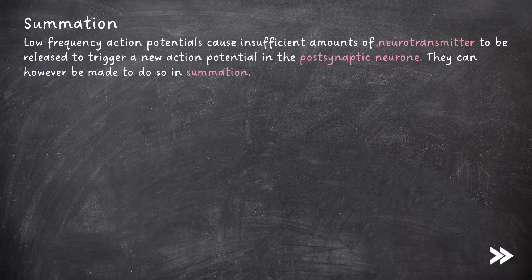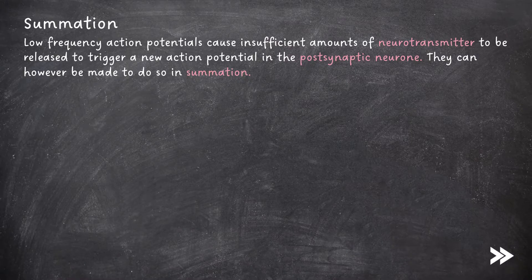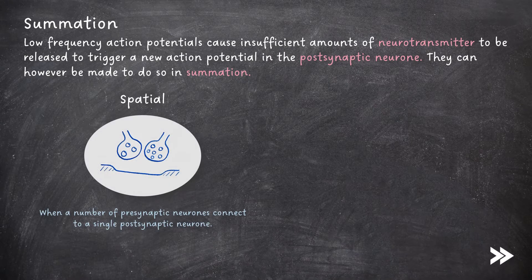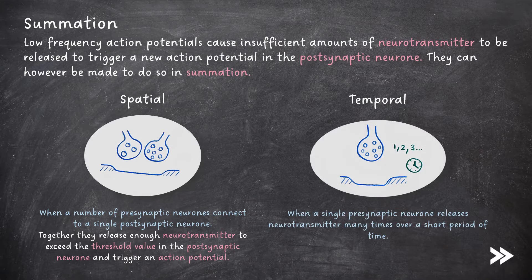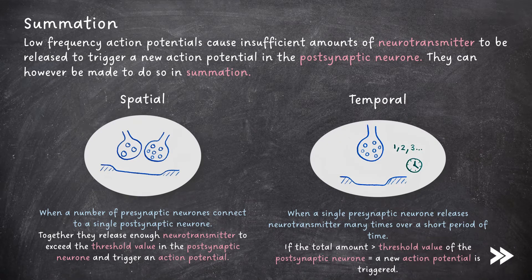We also need to know about the principle of summation. Low frequency action potentials cause insufficient amounts of neurotransmitter to be released to trigger a new action potential in the post-synaptic neuron, but they can do so through summation. There are two types: spatial and temporal. Spatial summation is when a number of pre-synaptic neurons connect to a single post-synaptic neuron, and together they release enough neurotransmitter to exceed the threshold and trigger a new action potential. Temporal summation is when a single pre-synaptic neuron releases neurotransmitter many times over a short period of time, and if the total voltage exceeds the threshold, a new action potential is triggered.